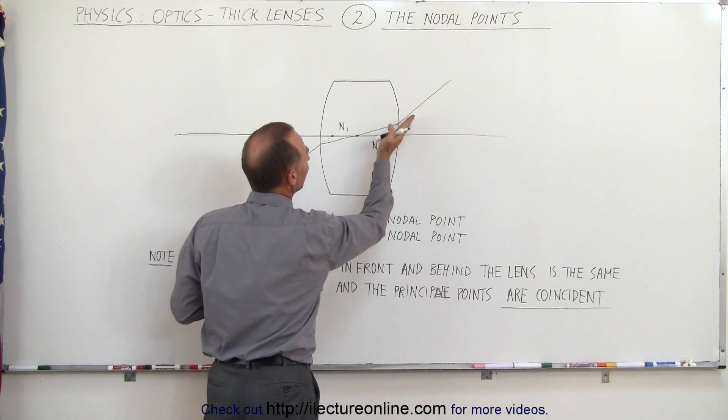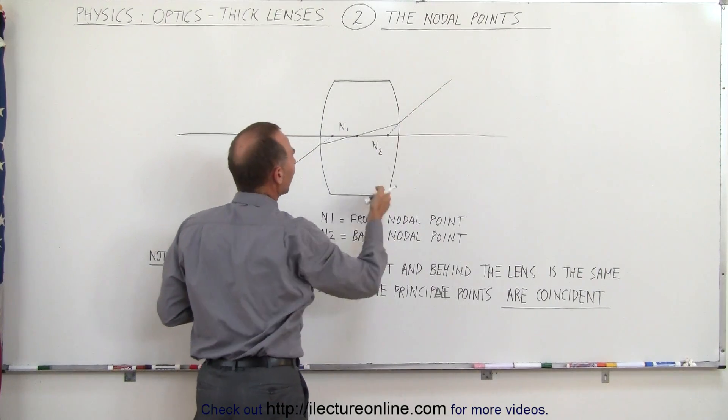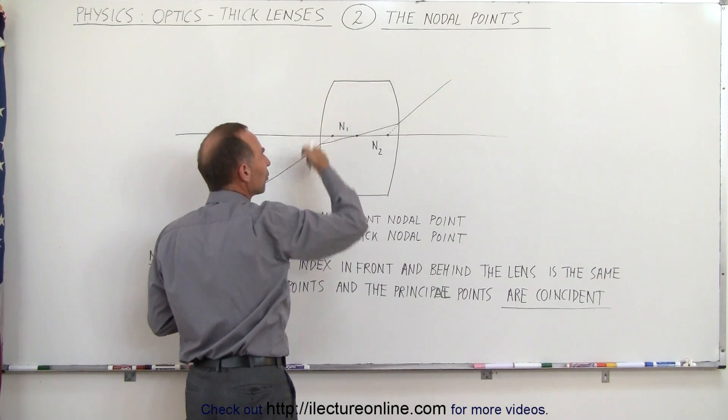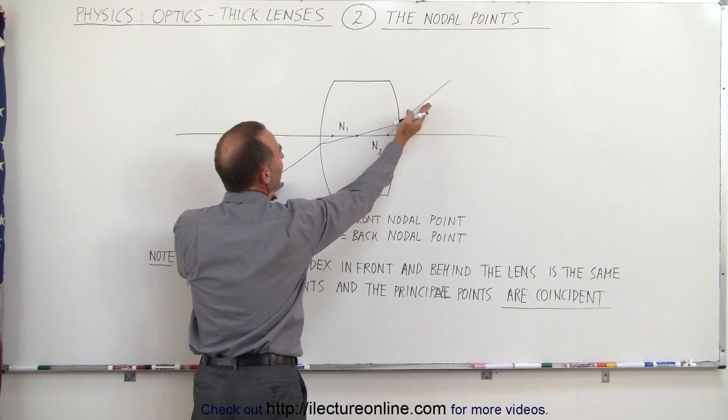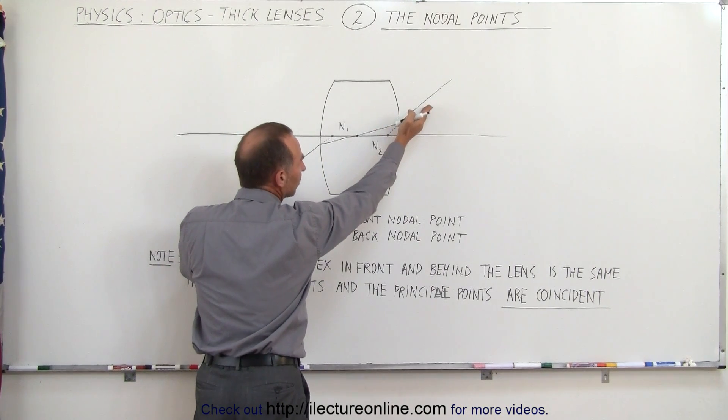As it emerges on the other side, assuming that the two curves on both sides of the lens are equal to one another, these rays would be parallel to one another.